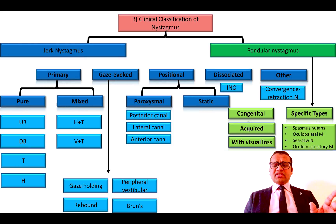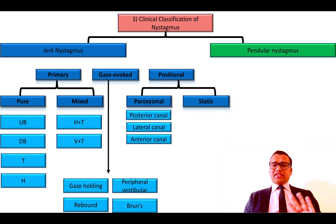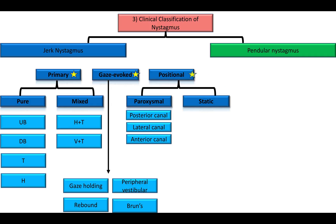At this juncture, we will discuss vestibular nystagmus, which is one of the most common varieties of nystagmus. The vestibular nystagmus could be either primary, gaze evoked, or positional. Each of these types could be seen in either central or peripheral vestibular lesions depending on further characteristics of the nystagmus, the vestibular structure involved, and the disease in question.